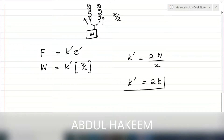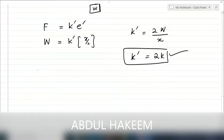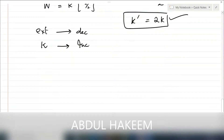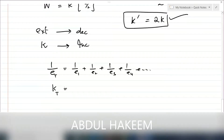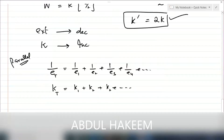When springs are connected in parallel, extension decreases but the material constant k increases. When multiple springs are in parallel, the total extension is found using 1 over e_total equals 1 over e1 plus 1 over e2 plus 1 over e3, and so on. The total material constant is found by simply adding individual material constants. This is the general formula for springs attached in parallel combination.